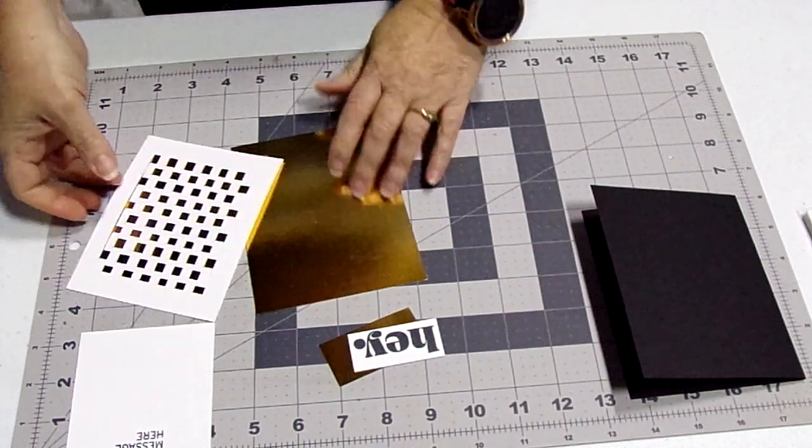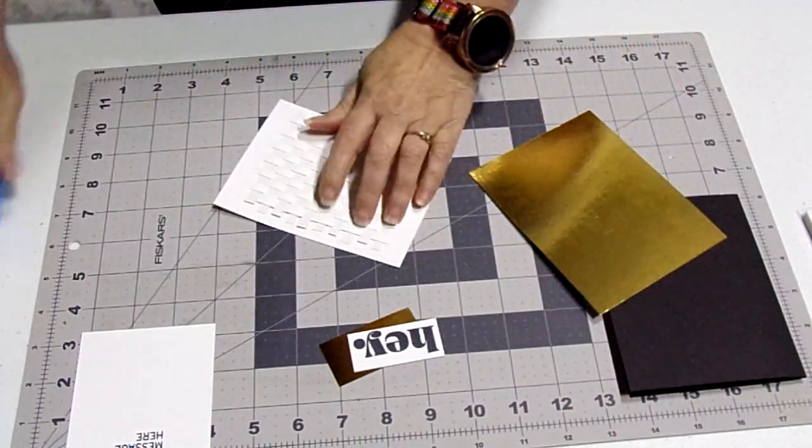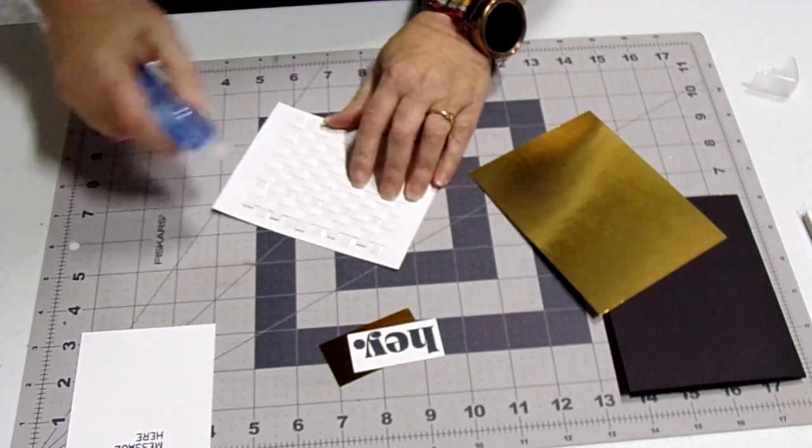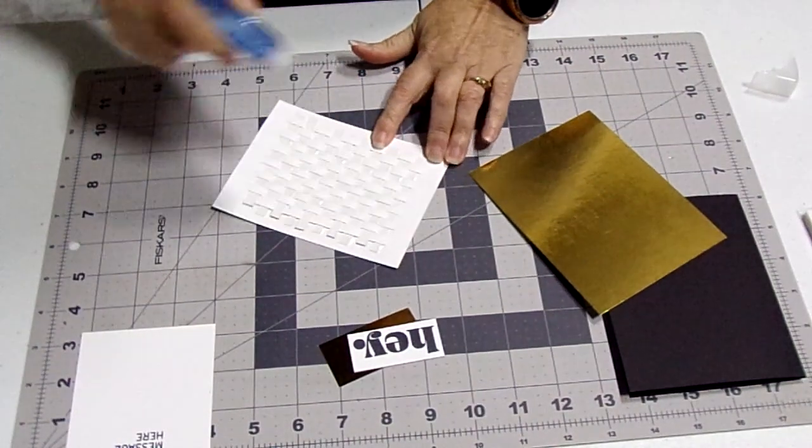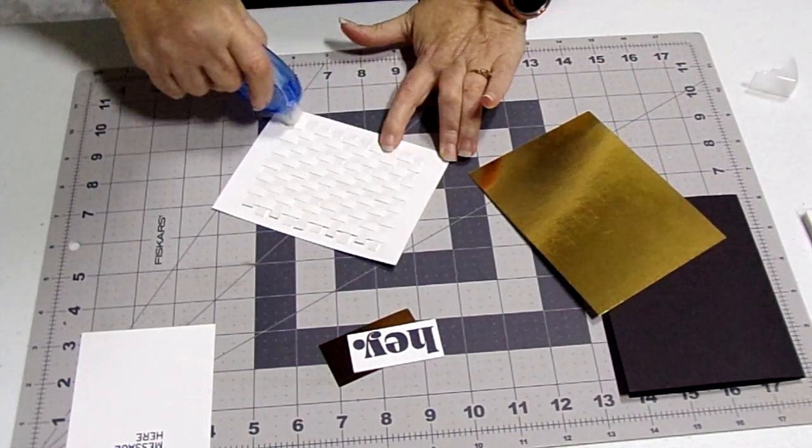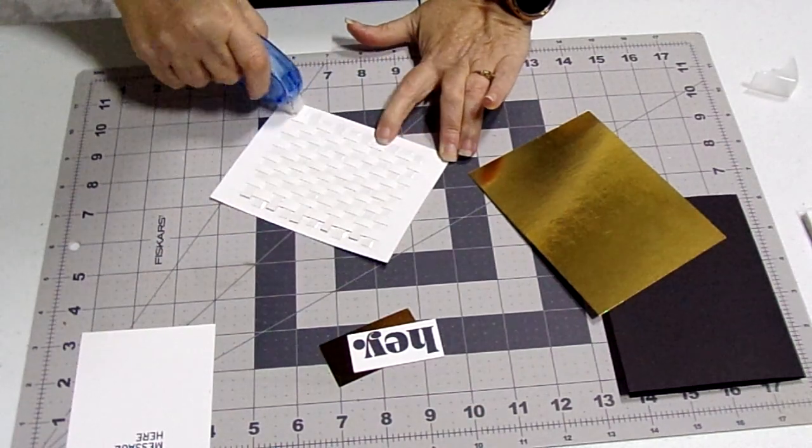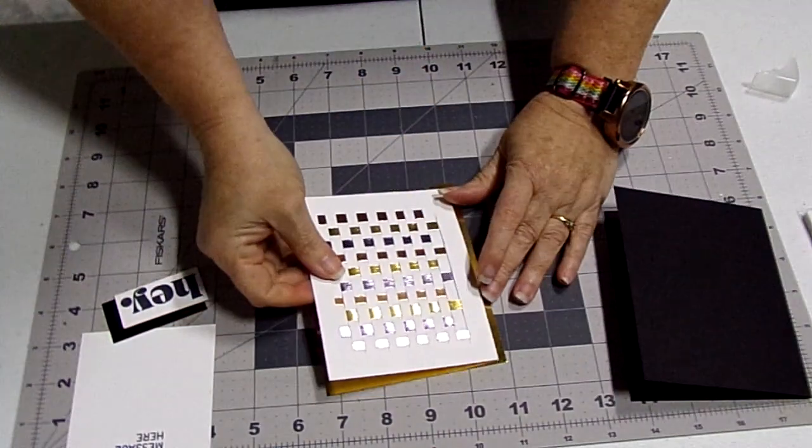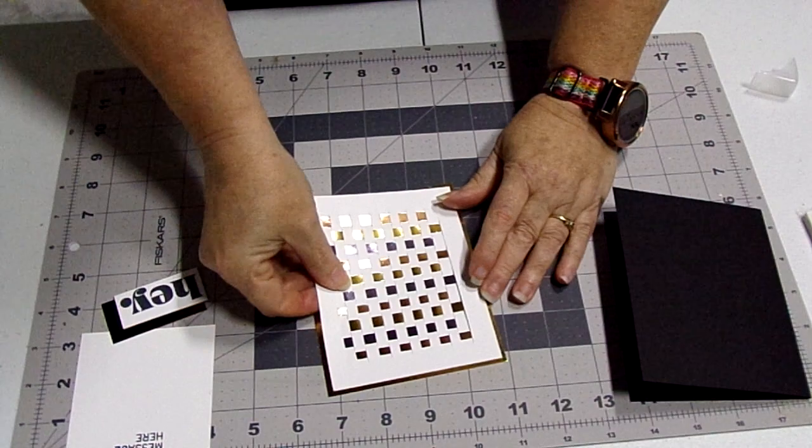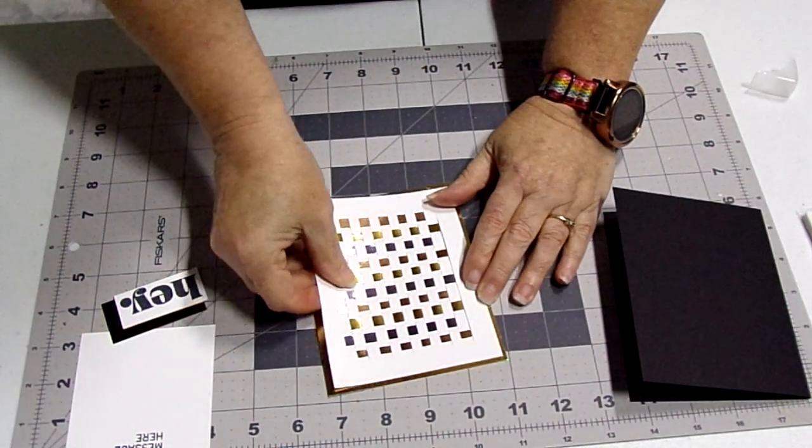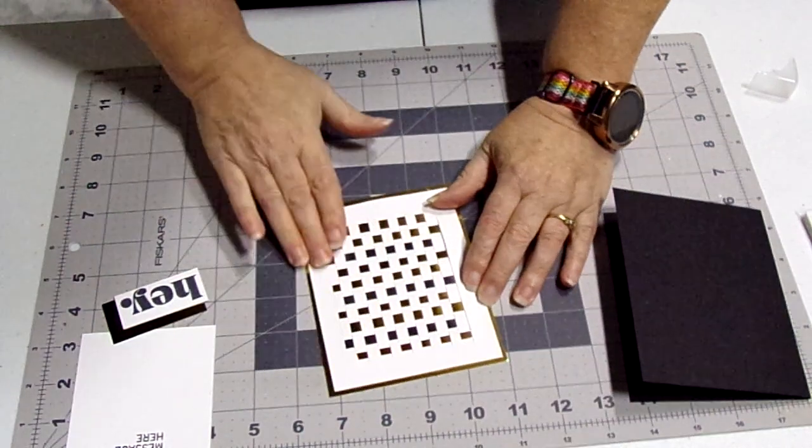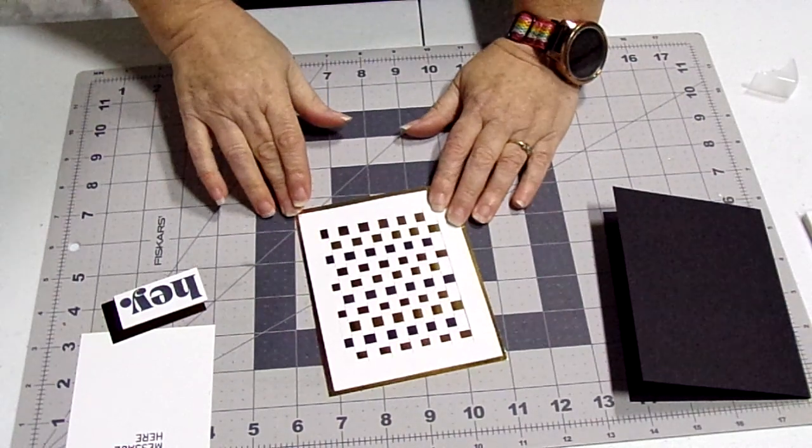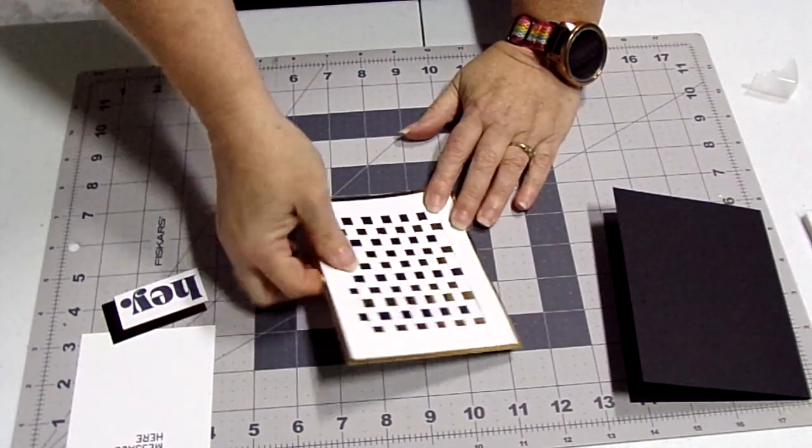So really quick I'm going to adhere it - going to center it. It doesn't need to be absolutely perfect, it's a handmade card. So adhere that down on the gold card which is five and a half by four and a quarter, five and a half by four and a quarter this way.